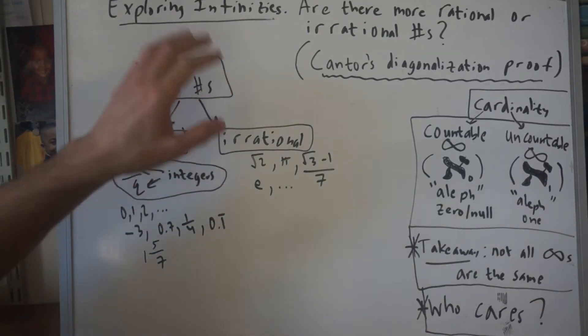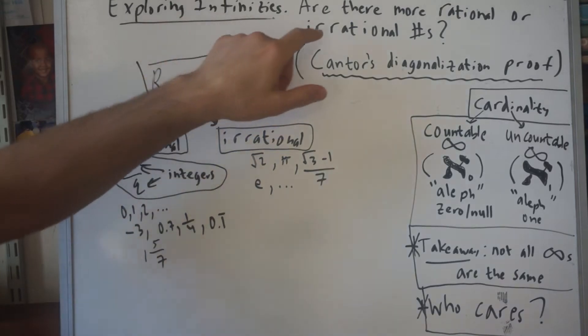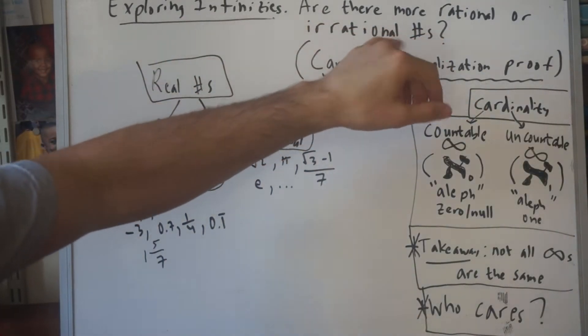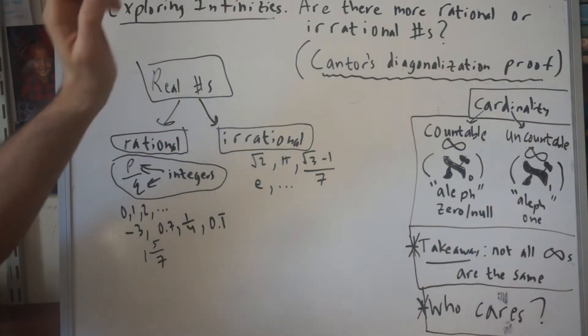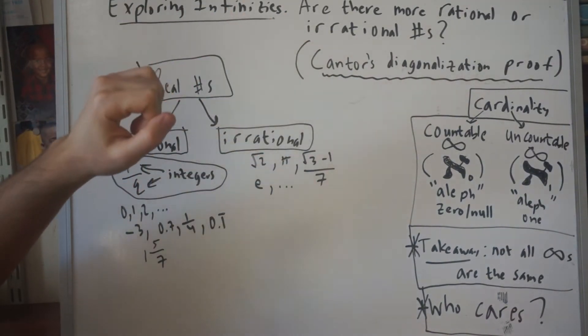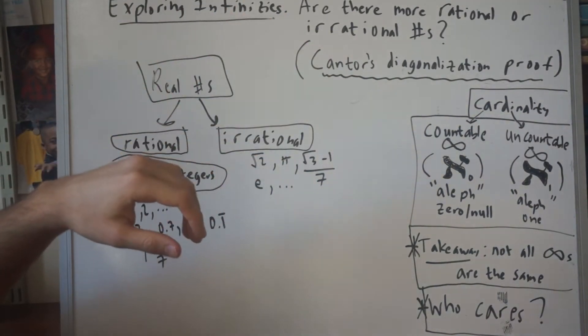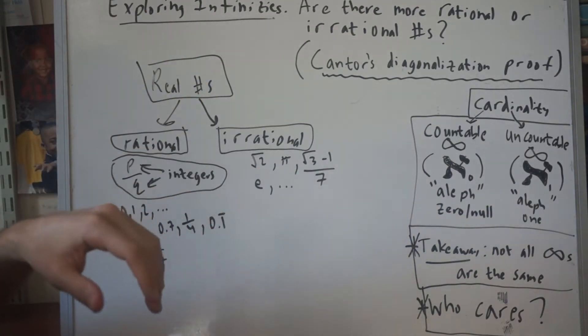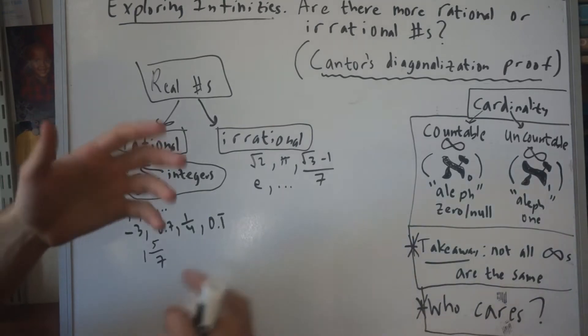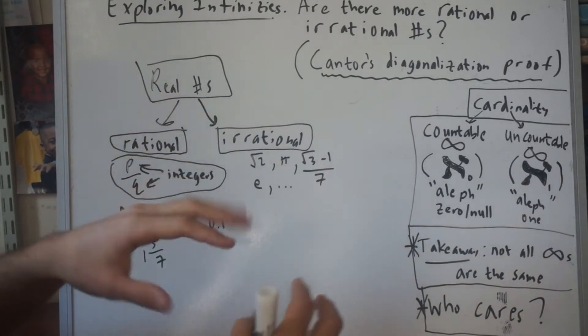Welcome back. Today we're going to continue exploring infinities. Are there more rational or irrational numbers? That's today's question. To remind you of the previous video, we discussed Hilbert's hotel and how you can basically cram two infinities into one infinity. So let's see if our intuitions of all infinity being the same hold in today's video.